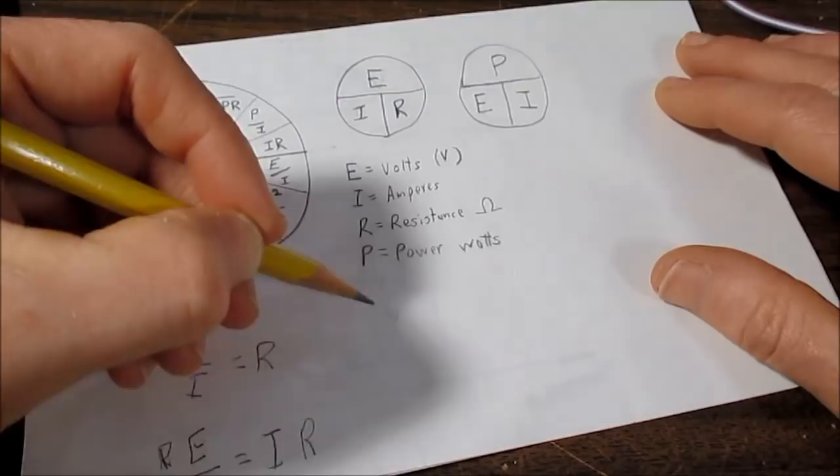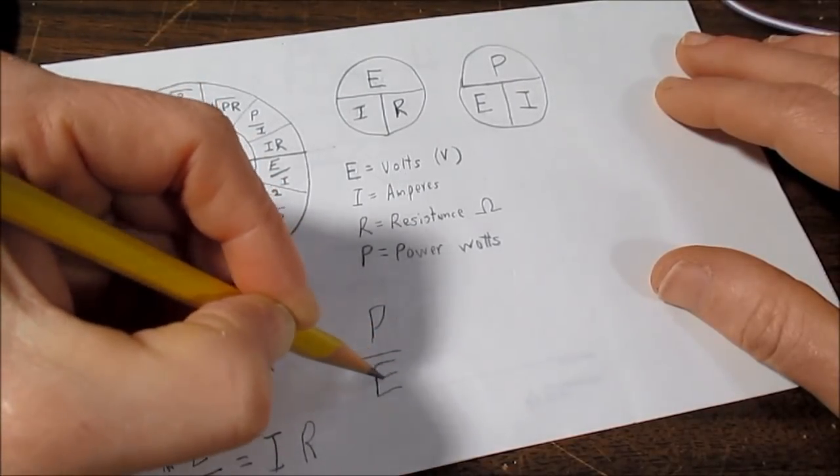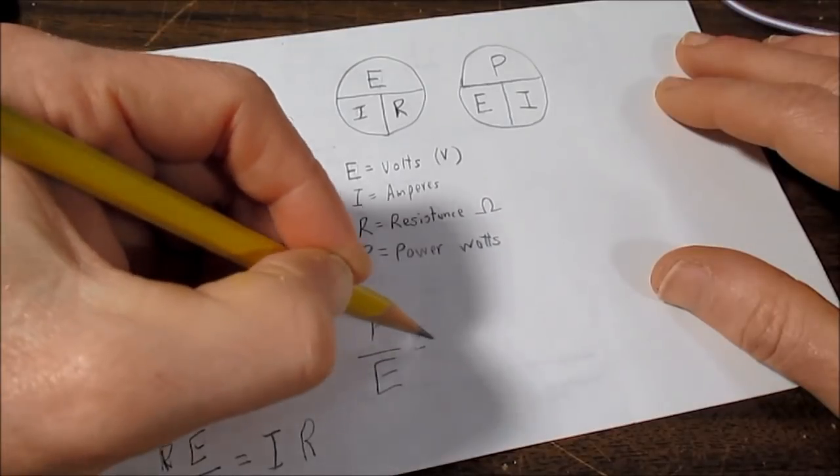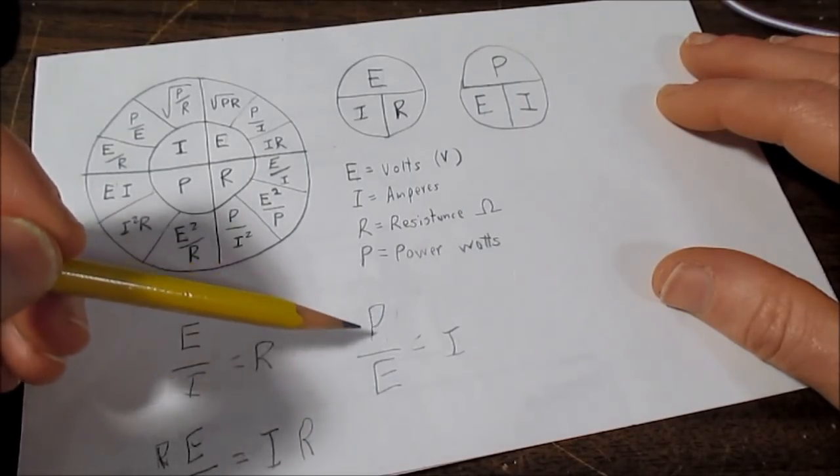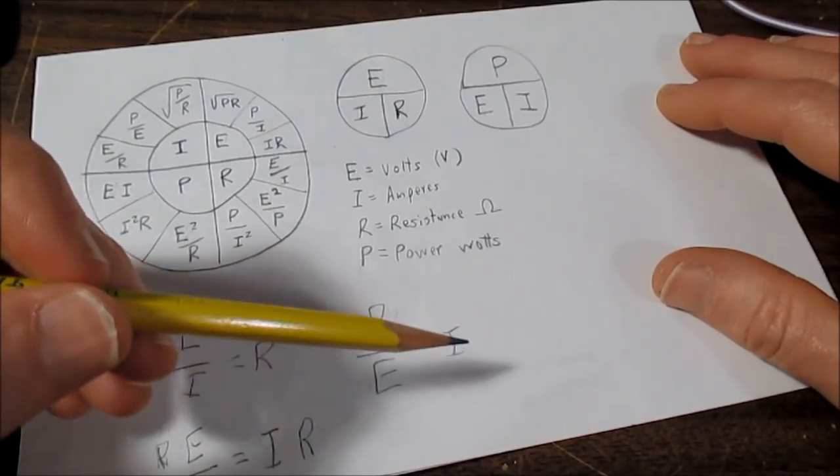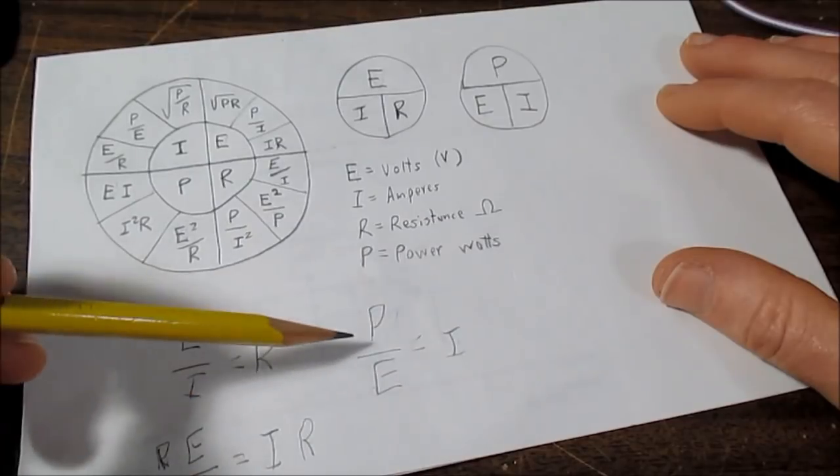So to give you one example, power in watts divided by voltage equals current. And again, these can be exchanged, so P over I equals E, and E times I equals P.